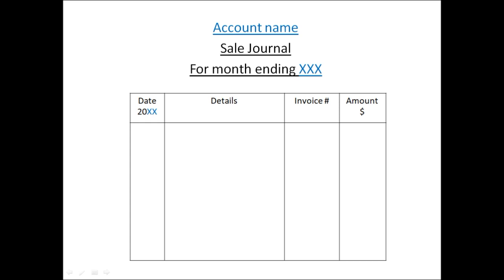Now let's discuss the format of the sales journal. First, place the account name at the top, then identify the type of account being prepared — which is the sales journal — and lastly, place the period for which you are preparing this journal, using the phrase 'for month ending' followed by the month and year. The columns needed are: date, detail, invoice number, and amount. Note that if no invoice number is given, you don't need to include that column, but CSEC exams typically provide one.